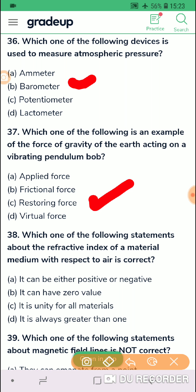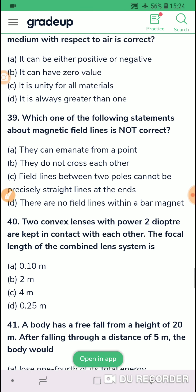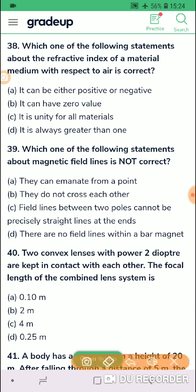Which one of the following statements about the refractive index of a material medium with respect to air is correct? Let us check question 38, they are asking about the refractive index. Let us see the option. It can be either positive or negative. No, till now I would not be agreeing to that. Question 38 just check. Can have zero value? No. It is unity for all materials, how can it be 1 for all? It is always greater than 1. So the best option is 38 D option, it is always greater than 1.